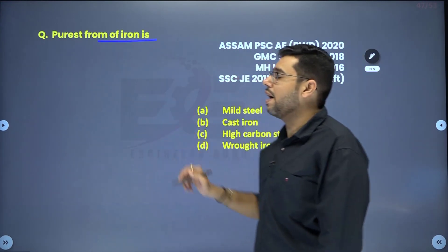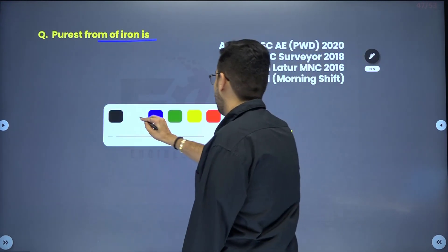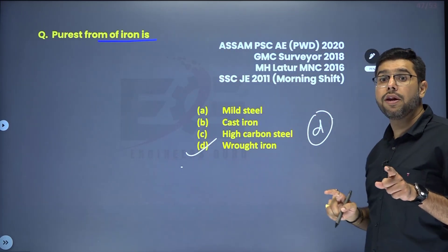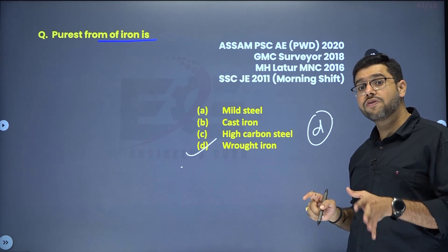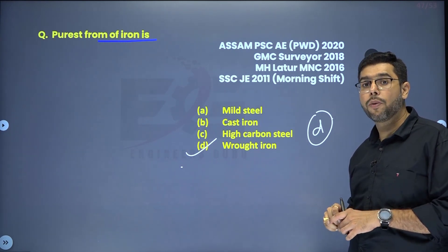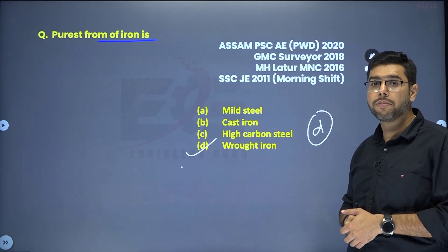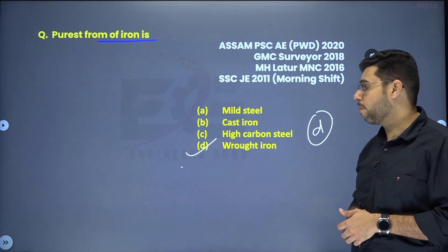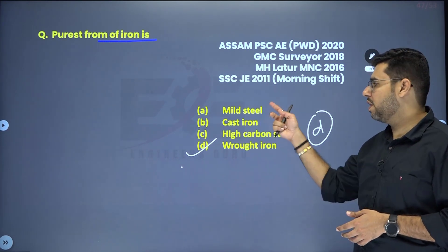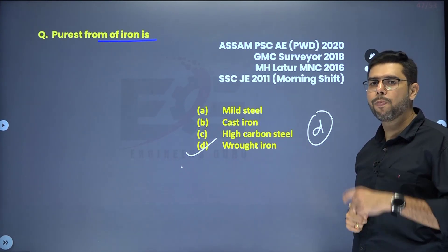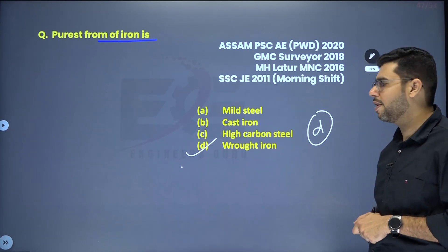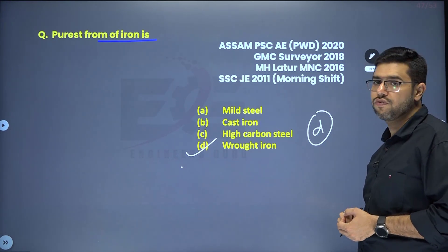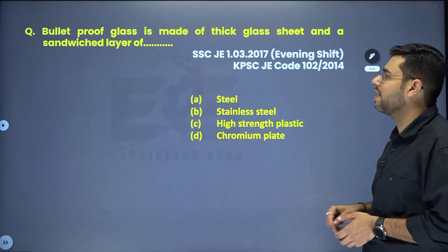Purest form of iron — it is wrought iron. Wrought iron is the purest form; it is not cast iron or pig iron. Pig iron is processed to make wrought iron, in which impurities are largely removed. Steel has quite a high carbon content; pig iron is processed to make steel. So wrought iron is the purest form of iron. Correct answer is D.